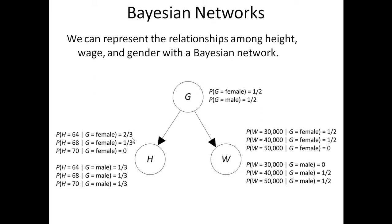The probability height equals 64 given gender equals female equals two-thirds — you can see this from the previous data set. The probability height equals 68 given gender equals female is one-third. The probability height equals 70 given gender equals female is zero. These are the conditional probabilities of height given the two different values of gender, and these are the conditional probabilities of wage given the two values of gender. This is a Bayesian network. A Bayesian network consists of a DAG and a conditional probability distribution of each variable in the DAG. If the variable is a root, it is the prior probability distribution.